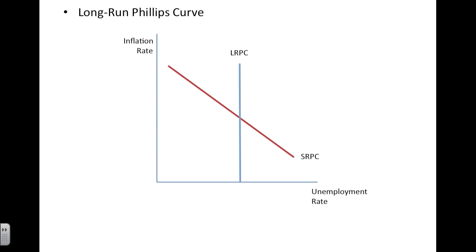The long-run Phillips curve is inelastic. Therefore, inflation has no impact on unemployment rate in the long run. So in the long run, we have a stable economy of about 5% unemployment and maybe 3% inflation rate.